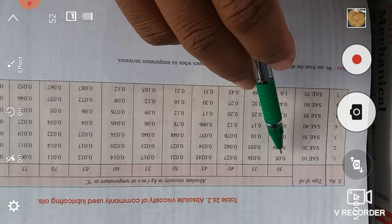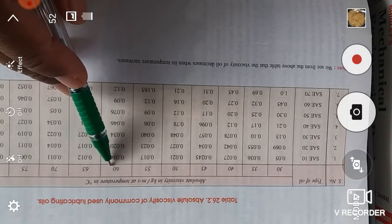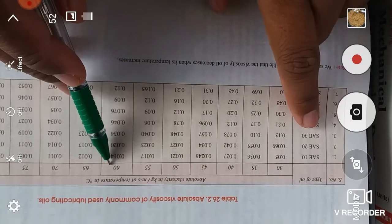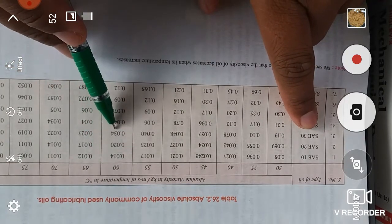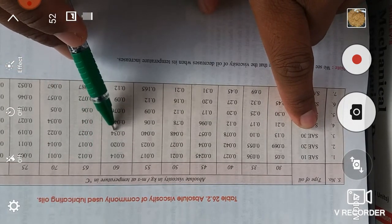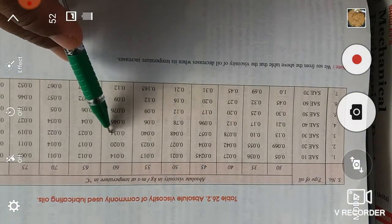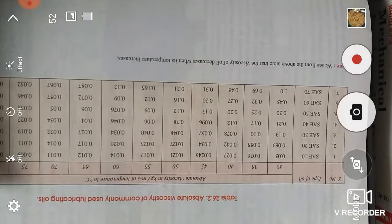If we consider the temperature becomes 60 degree Celsius and lubricating oil becomes SAE 30, absolute viscosity becomes 0.034 kilogram per meter second. In this way we read this table.